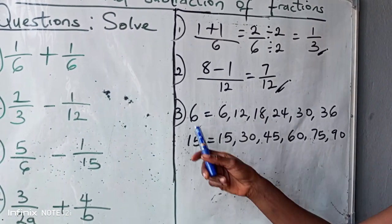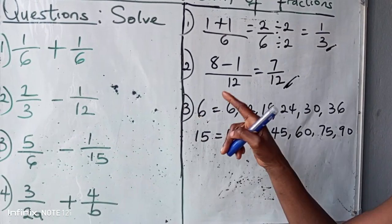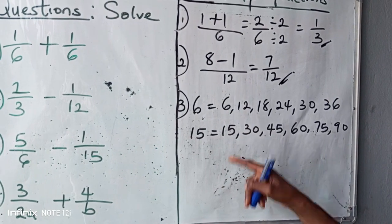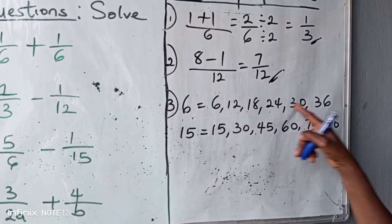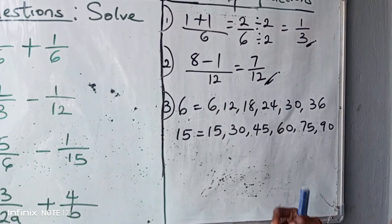Now, let me quickly explain this. How do you get this multiple? Six times one, six. Six times two, twelve. Six times three, eighteen. Six times four, twenty-four, and so on. That's how you get the multiple.